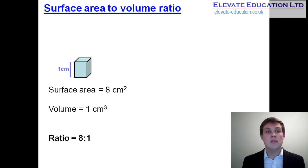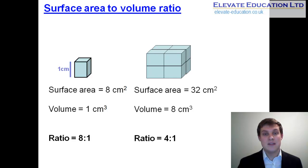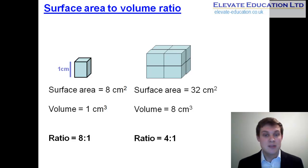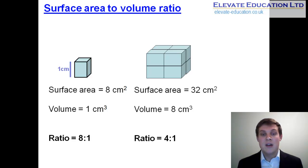That means for every one centimetre cubed of volume within the cell, there are eight centimetres squared of surface area, giving a large area of membrane over which that volume can exchange with its environment. If we consider a multicellular organism made of eight cells joined together, the surface area increases to 32 centimetres squared while the volume increases to eight centimetres cubed, giving a ratio of four to one. As the organism becomes larger, the exchange surface each cubic centimetre of volume relates to is becoming reduced.